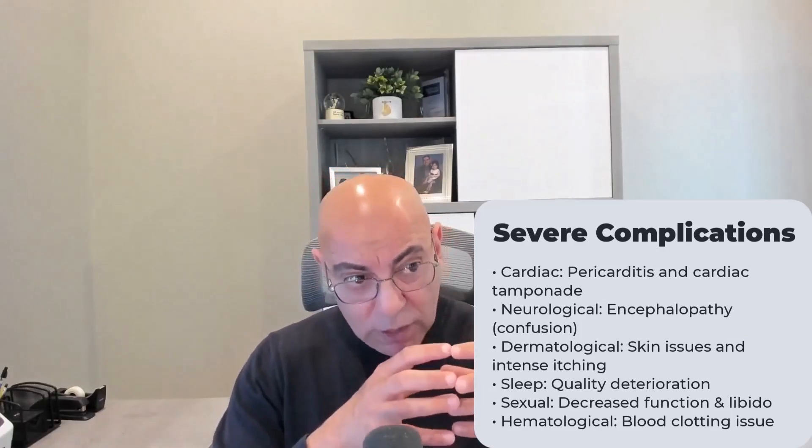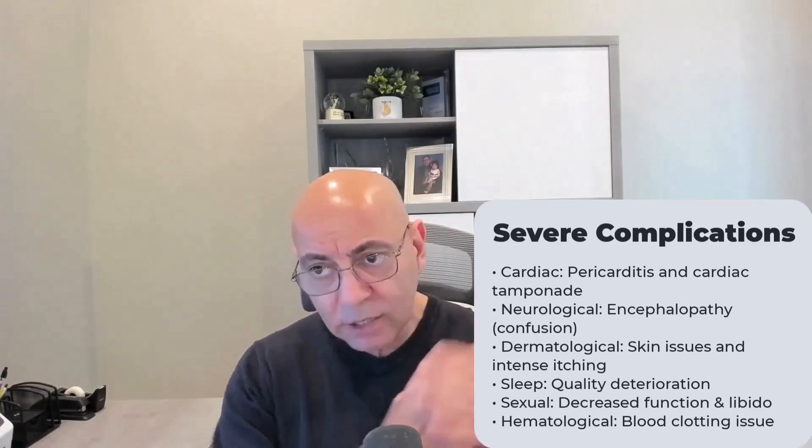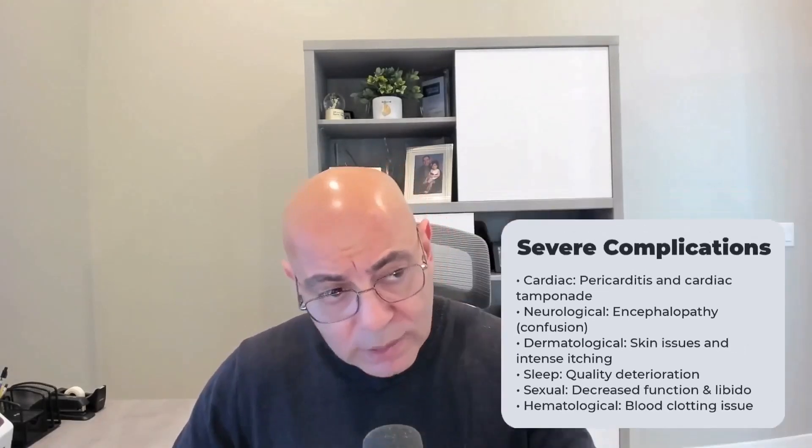Some of the most serious symptoms at stage five include inflammation around the heart — pericarditis — which can be severe because fluid can get trapped between the lining of the heart and the heart itself, called a tamponade, which is life-threatening. People can become completely confused — encephalopathy. Skin issues are very common, with persistent itching from toxic buildup. Sleep quality deteriorates. Men may notice erectile dysfunction, and women decreased libido. Blood clotting is also affected, with platelets not working as well.